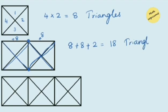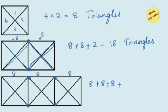You can notice the third figure has three such squares. Where two squares meet at a point there is a formation of two bigger triangles. Three squares meet at two points, making 2 plus 2 equals 4 extra triangles. So adding all: 8 plus 8 plus 8 is 24, and 24 plus 4 gives you 28 triangles.